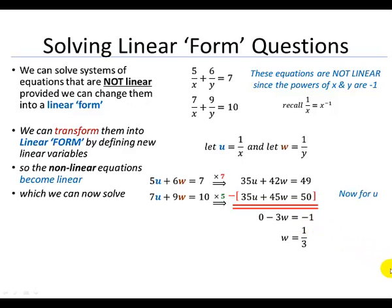We can now solve for our u variable from this system of equations. We'll take our w answer and solve it into the highlighted equation. So 5 times u plus 6 times 1 third is equal to 7. Doing our algebra and rearranging, our u comes out to 1.